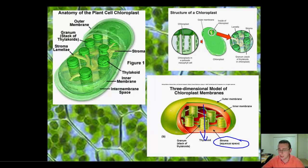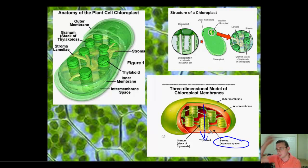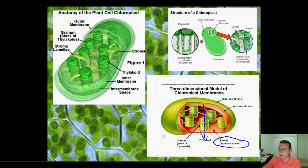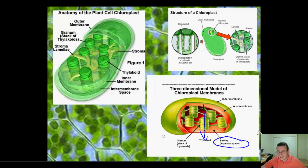So what are the roles of all these parts? The grana are stacked to create more efficiency. The thylakoid membranes are where the light reactions take place. The stroma is where the other reactions - the cycle - take place. And the lumen, which is the inside of the thylakoid, is going to be the acidic part that holds all the proton potential. It's called lumen because it's really bright as the light is going through it and being reflected in there.